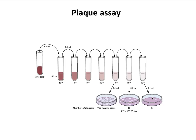To do a plaque assay, you start with a tube of material you think contains virus—a supernatant from infected cells or a clinical specimen. You make serial tenfold dilutions in buffer, then plate a small amount of each dilution onto a monolayer of cells: add 0.1 ml, allow the virus to adsorb, then cover the cells with a semi-solid agar overlay containing nutrients so the cells continue to survive. After a few days, remove the agar overlay, stain the cells, and wherever viruses have infected and killed cells you see a clear zone—a plaque.